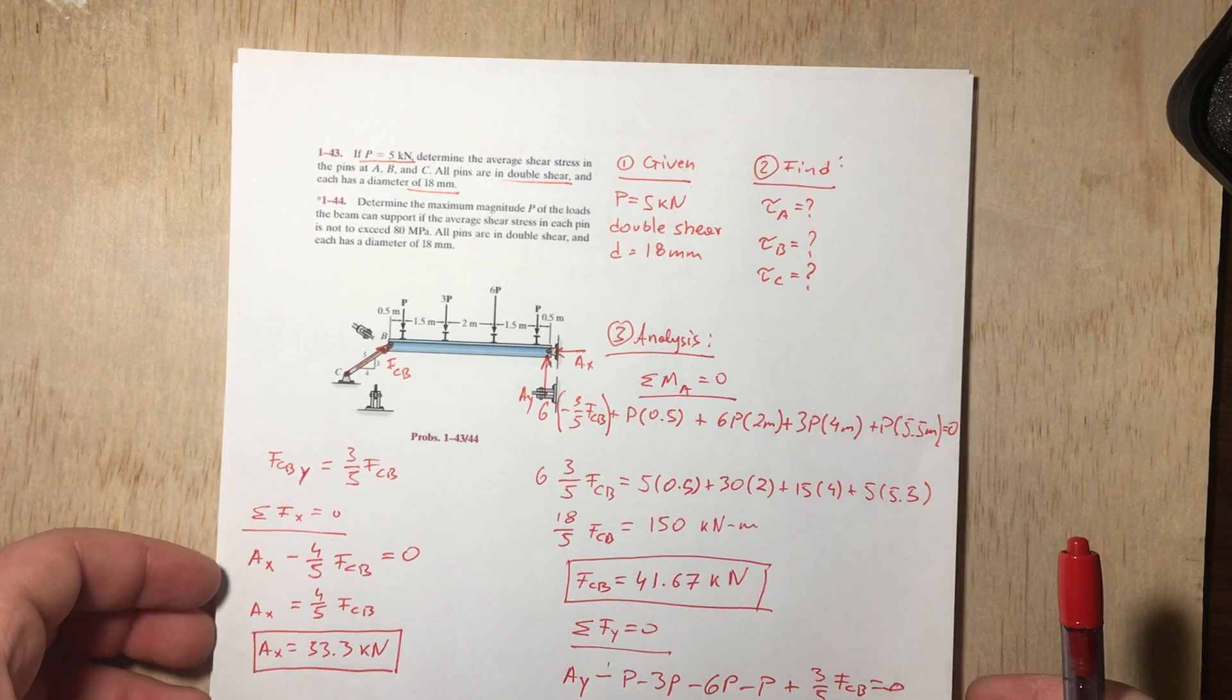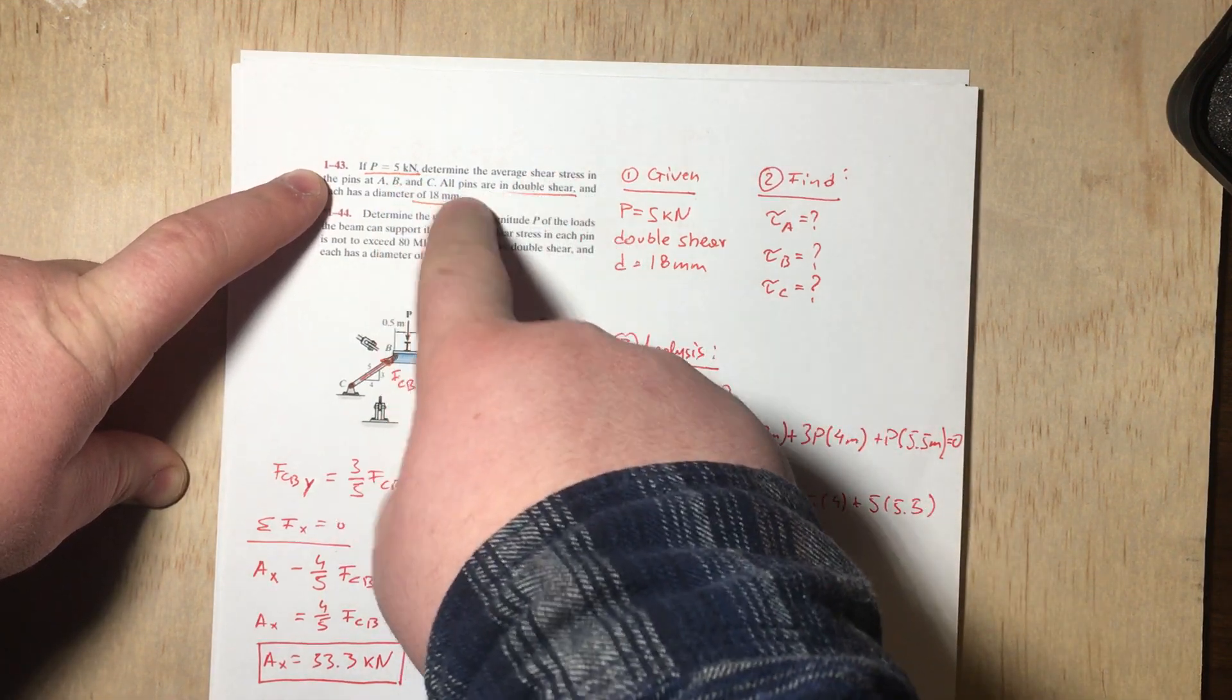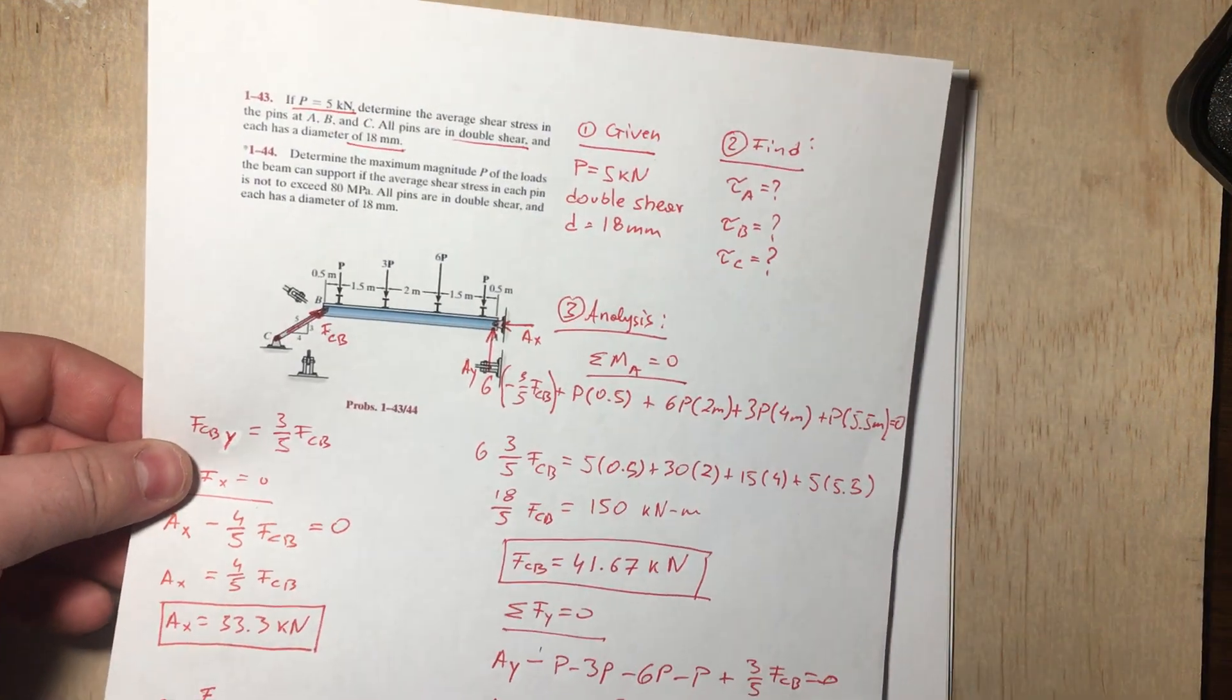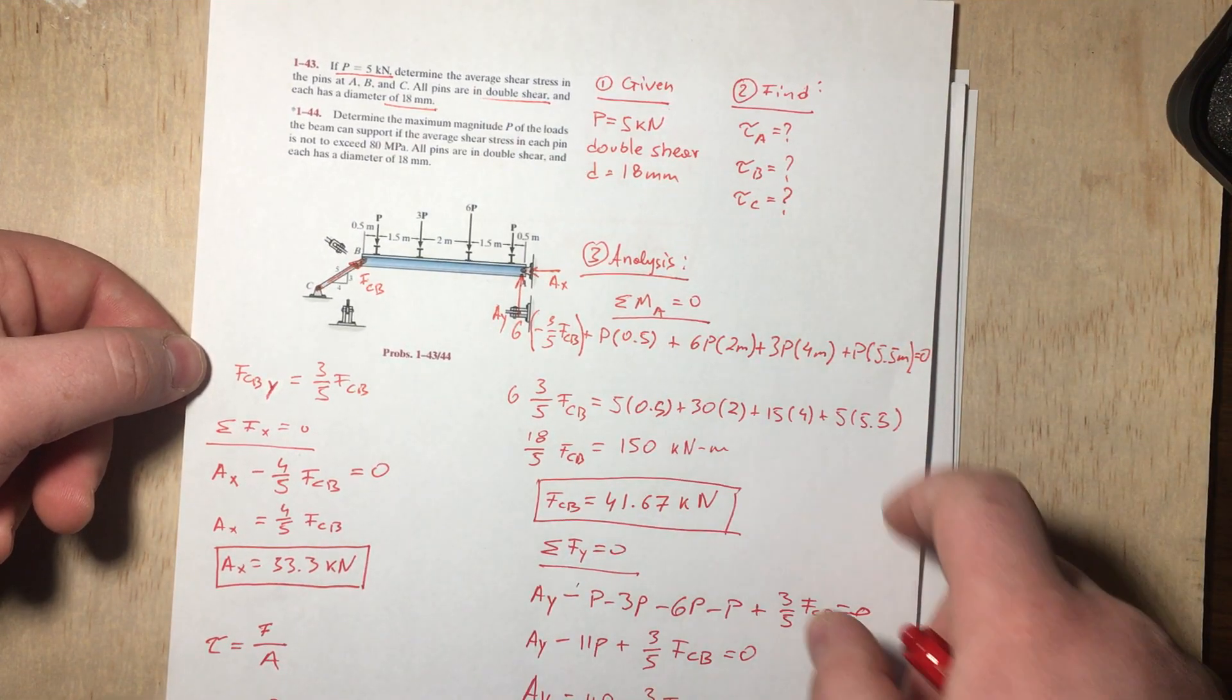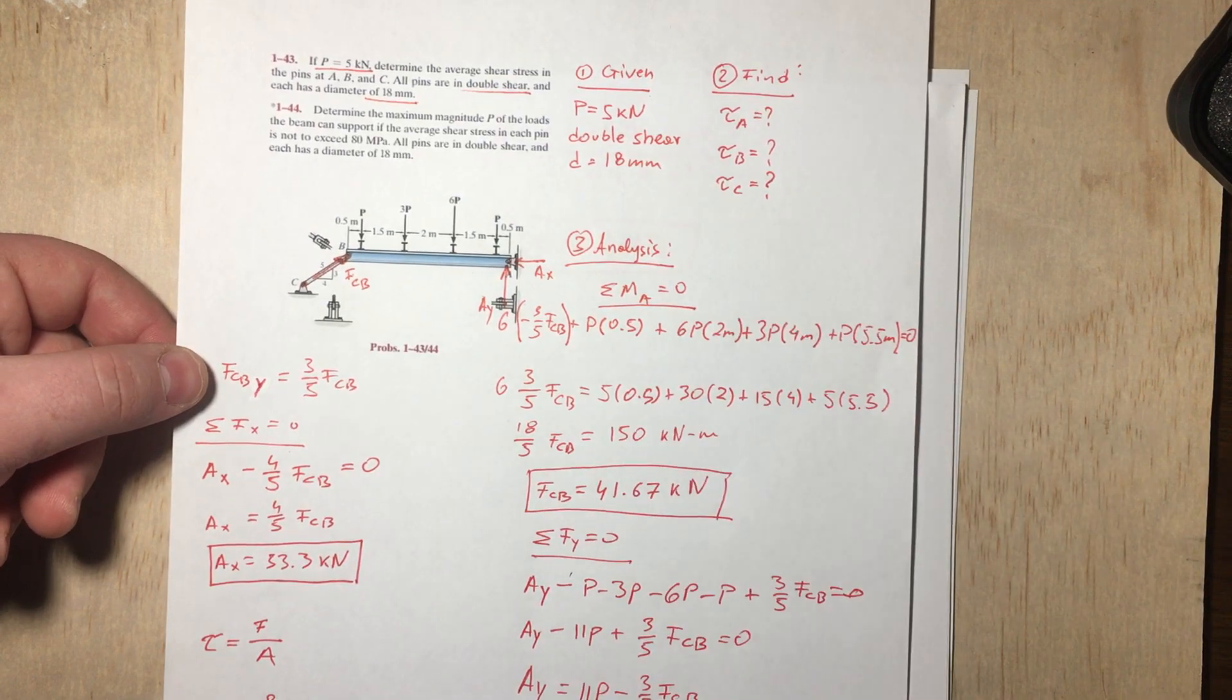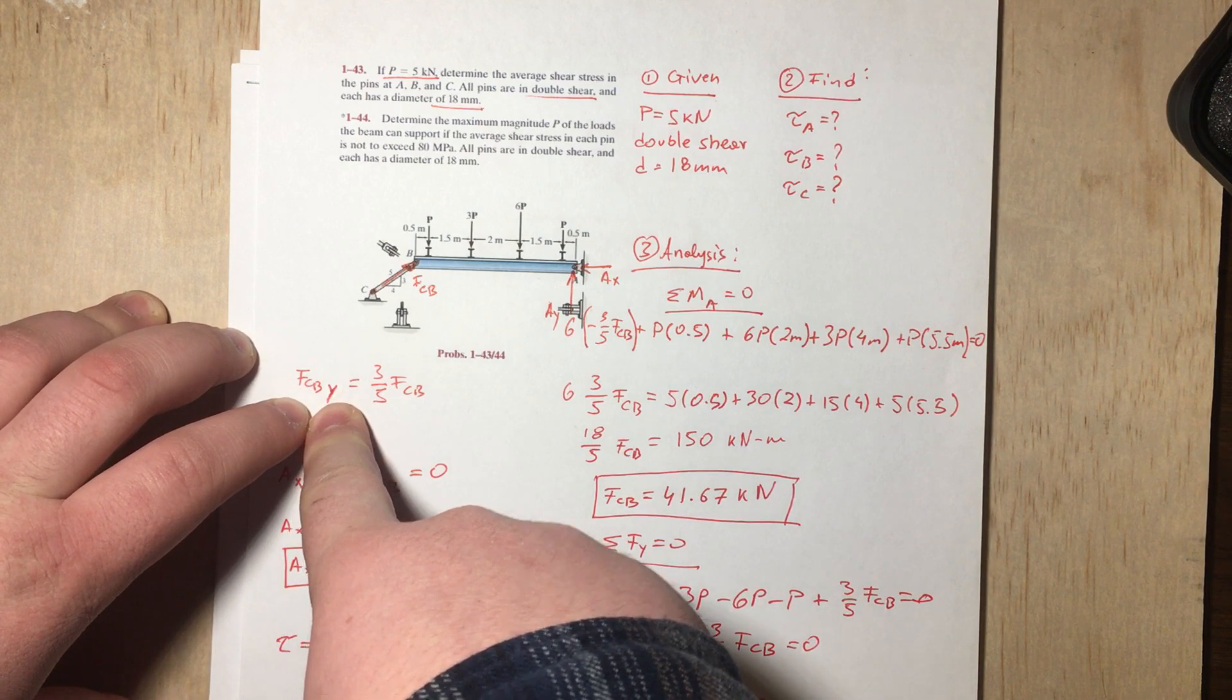Hello everyone. In the previous video we went over this problem where we had to determine the average shear stress on pins A, B, and C. Without any special skills, basically just calculating the reaction forces using statics, we were able to come up with the shear at A, B, and C. However, I would like to apologize because in the previous video I labeled this as X when it should have been Y.